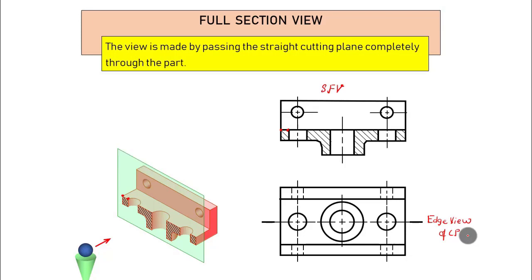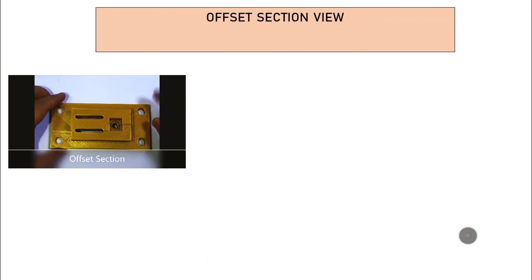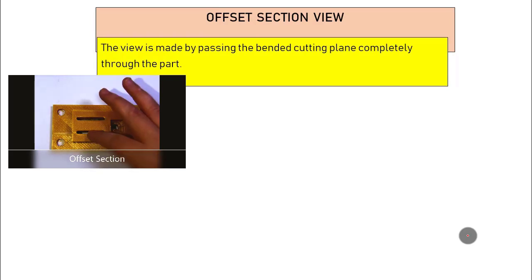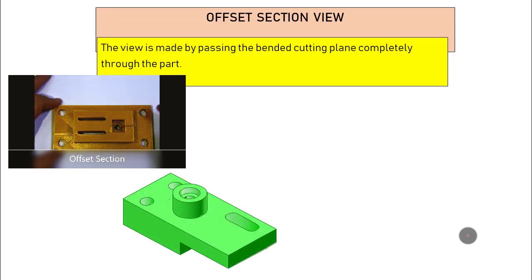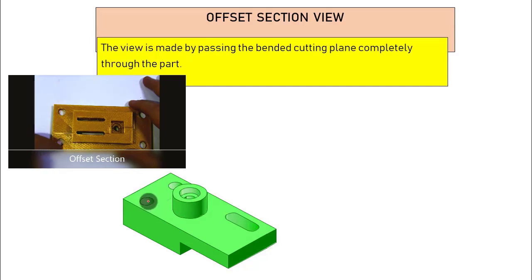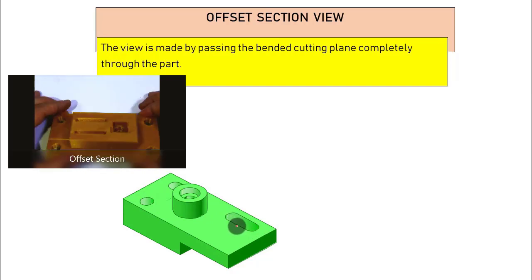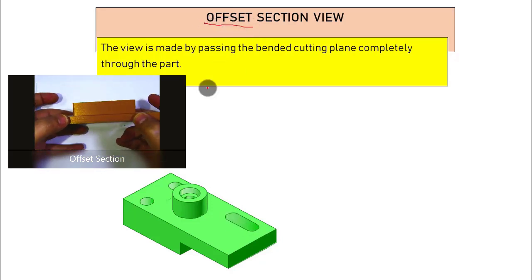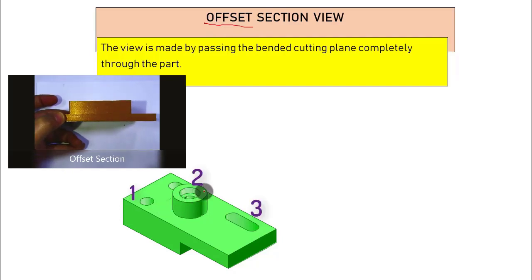Offset section view is used when features of the part are not aligned on the same straight line. This view is made by passing a bent cutting plane line completely through the part. Using the 3D-printed part example, I start from one feature, go to another, then exit. After removing the front portion, you look at the part from inside — this is called the offset section view.